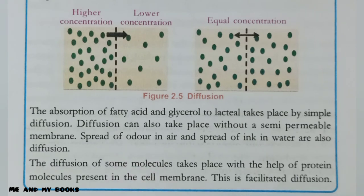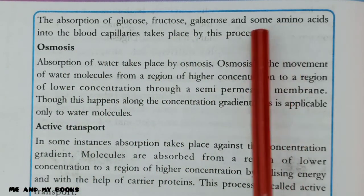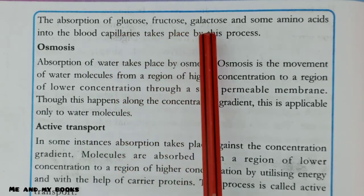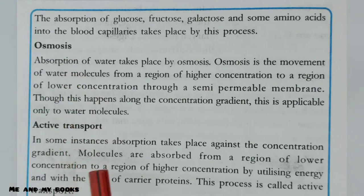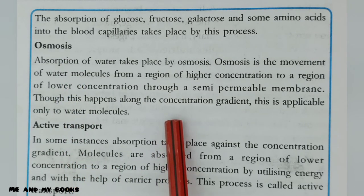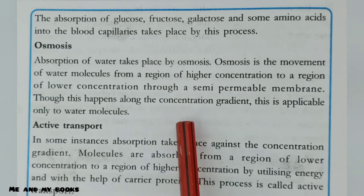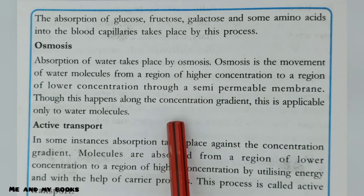In facilitated diffusion, the diffusion of some molecules takes place with the help of protein molecules present in the cell membrane. The absorption of glucose, fructose, galactose, and some amino acids into the blood capillaries takes place by this process. For osmosis, the absorption of water takes place by osmosis. Osmosis is the movement of water molecules from a region of higher concentration to a region of lower concentration through a semi-permeable membrane. Though this happens along the concentration gradient, it is applicable only to water molecules.